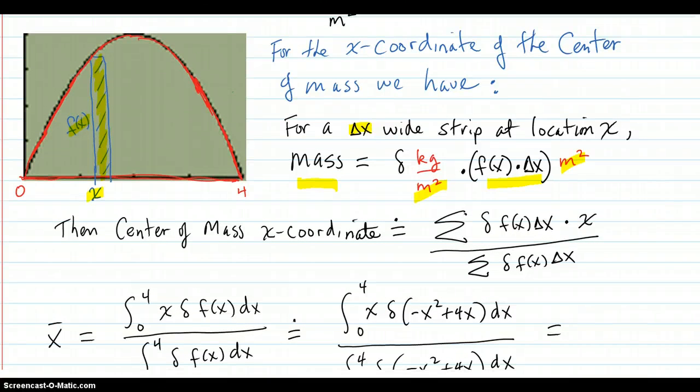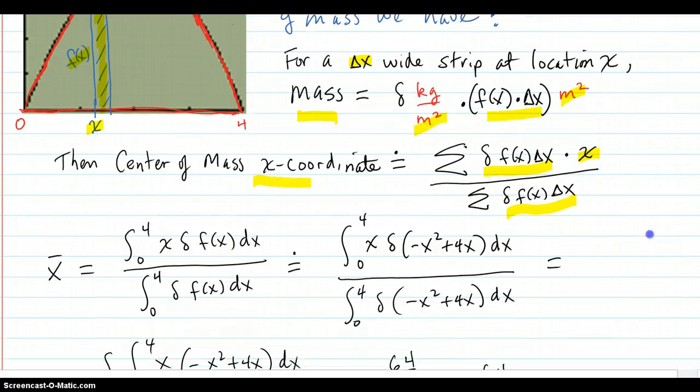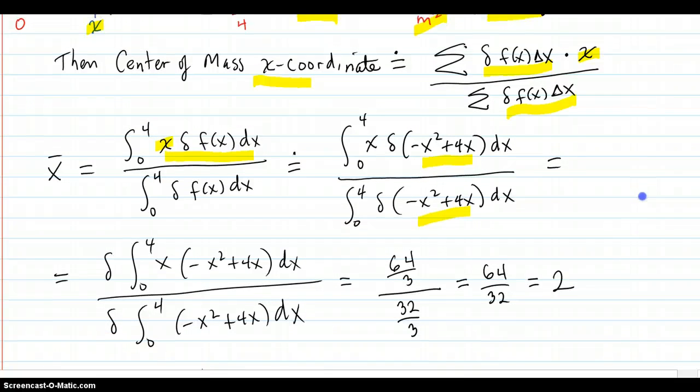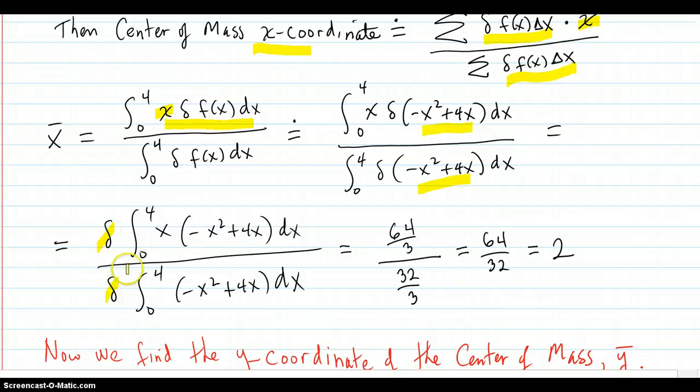So from our previous formulas, the center of mass x-coordinate is going to be the sum of locations times their mass divided by sum of the masses. So you put that in here, location times the mass over the sum of the masses. Put it in a function that we have for f of x. Factor out the delta constant density throughout. Work out these integrals. I worked that out in Wolfram Alpha and got 64 thirds over 32 thirds, which is 2. And that makes sense.